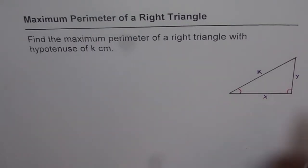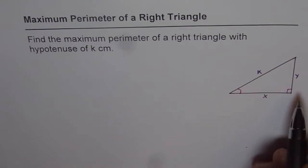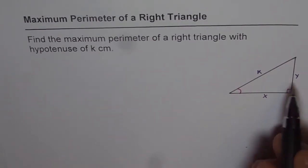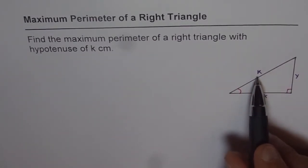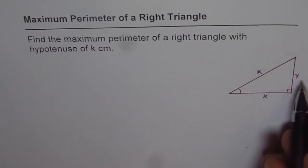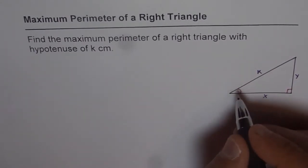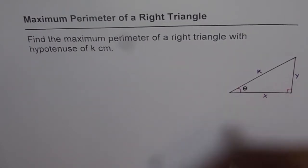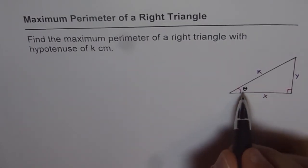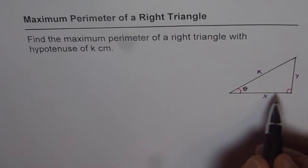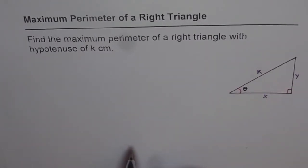Now there are two approaches to this. We can use the Pythagorean theorem, treating k as a constant and x and y as variables. The other approach, which we are going to do now, is to use trigonometry. So let us say this angle is theta.